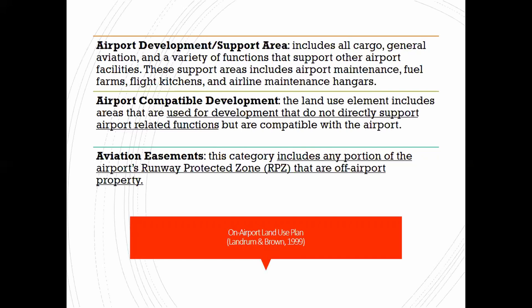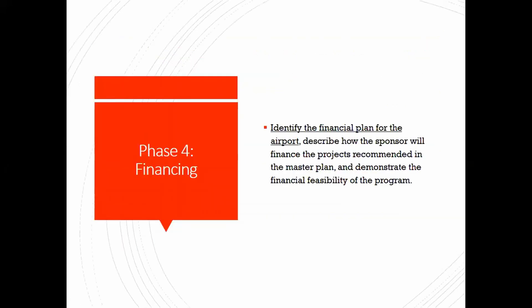The aviation easement includes any portion of the airport's runway protected zone (RPZ) that is off airport property. You have an RPZ around your airport within which, for basically the lifespan of that airport, nothing can be developed — or nothing tall or legally permissible can be developed in that space. Then phase four is financing, where you identify the financial plan.